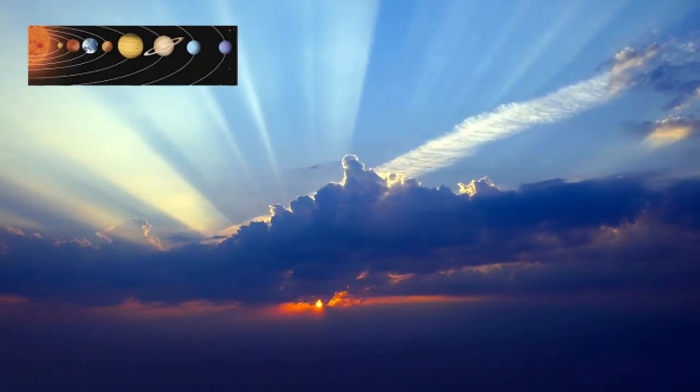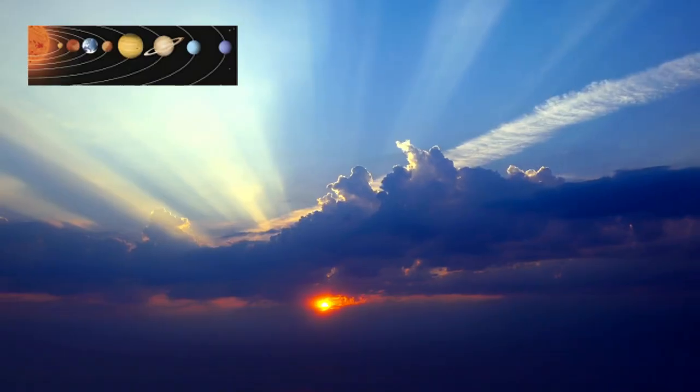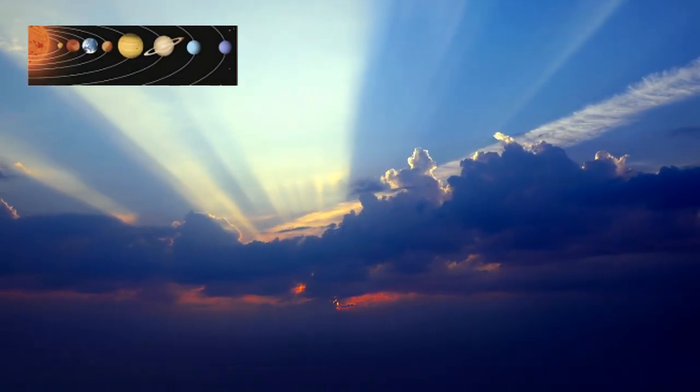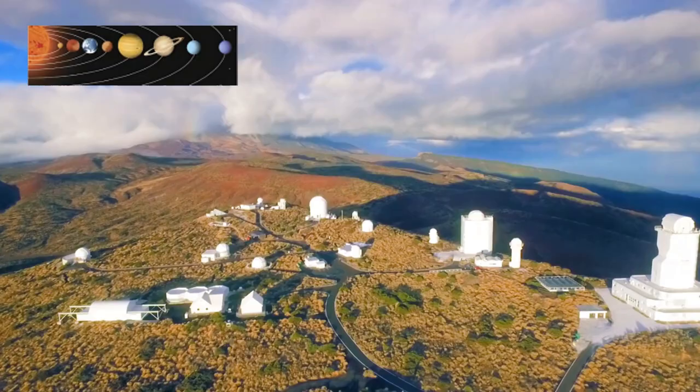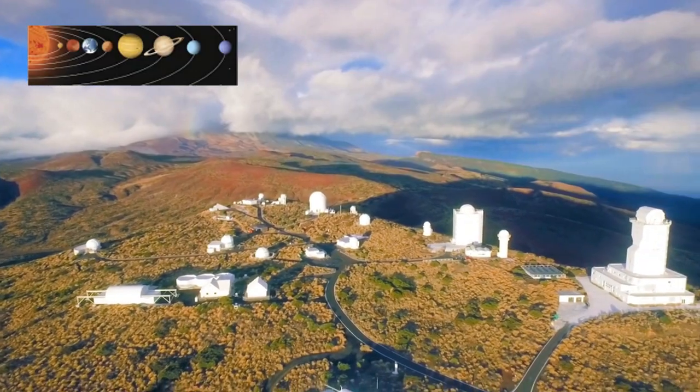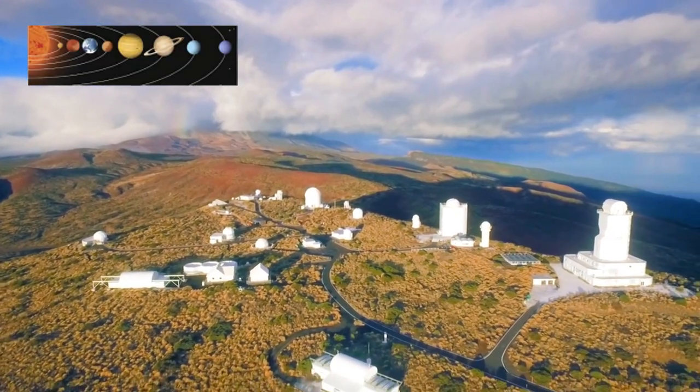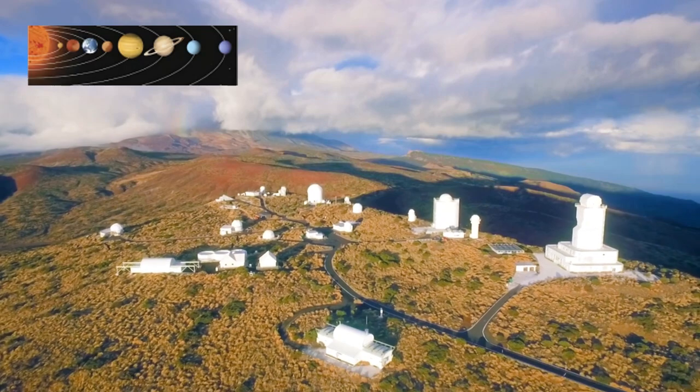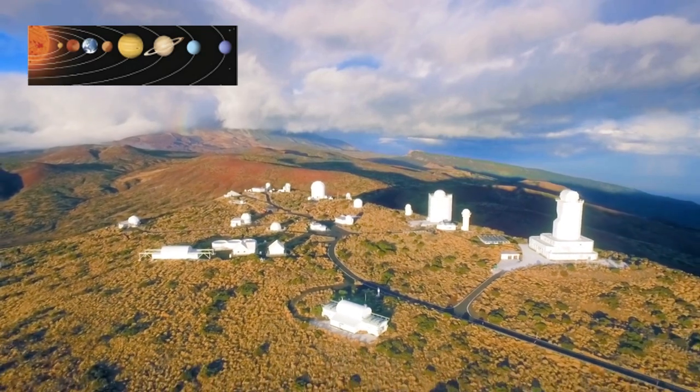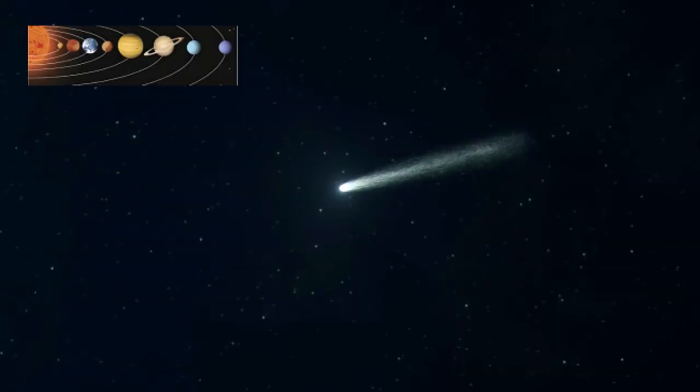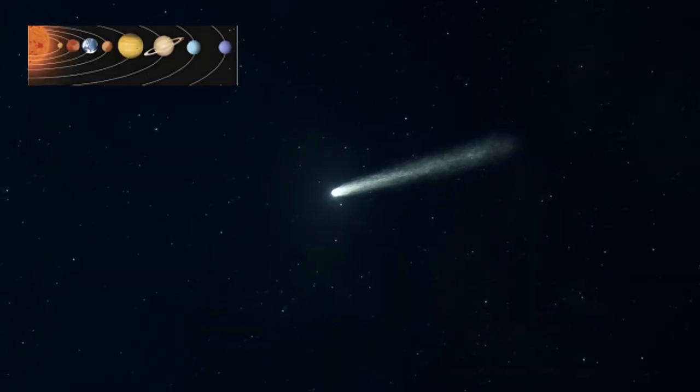This compressed schedule brings something unique. For the first time, astronomers may catch multiple bright comets in the same frame, tails sweeping across the night sky together. Data pipelines will be overwhelmed, observatories will run on tight rotations, and sky watchers will find themselves double-checking which comet they're pointing at. In a way, the real challenge of 2025 isn't spotting comets—it's keeping them straight.